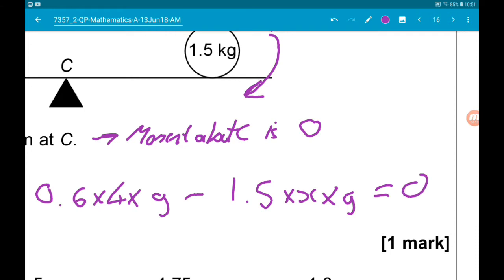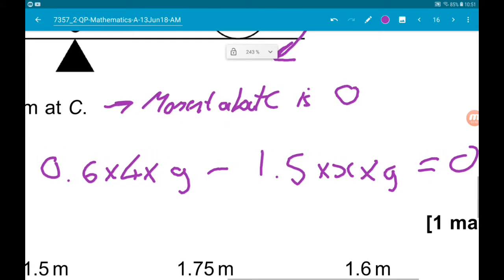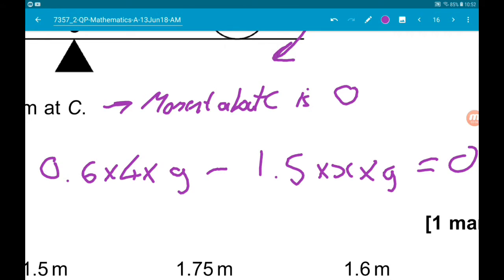Now, we can divide the g's away and move the 1.5X to get 0.6 times 4 is 2.4.